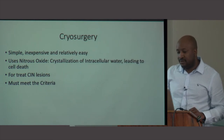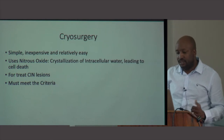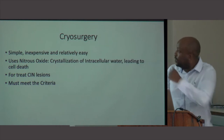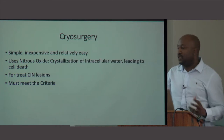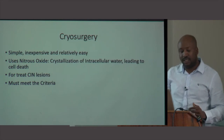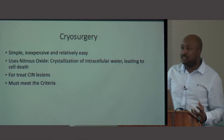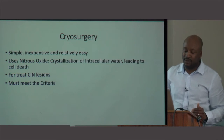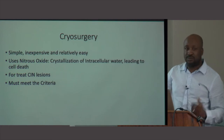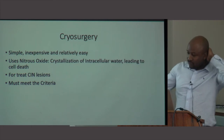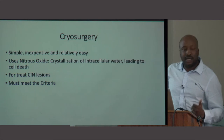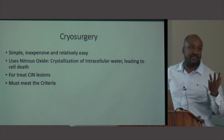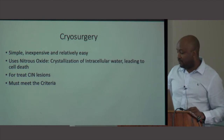Cryosurgery is a simple modality usually recommended for low- and middle-income countries. It's ideal as a see-and-treat method using acetic acid or Lugol's iodine staining. It's mainly for CIN 1 lesions, with specific criteria that must be fulfilled, and you must still have a colposcopy referral pathway. Nitrous oxide is used, so you need a supply of cylinders or piped nitrous oxide. Criteria include: patient ideally under 40, ability to see the transformation zone, lesion covering less than 75% of the cervix, and type 1 transformation zone.